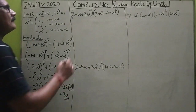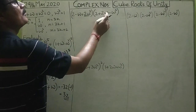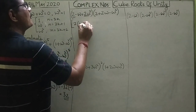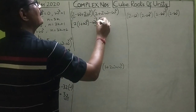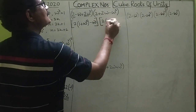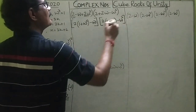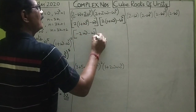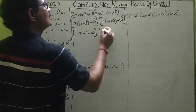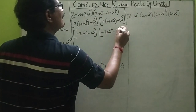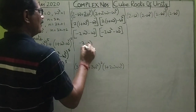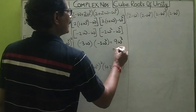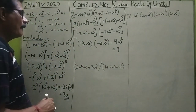The next sum is (2 minus omega plus 2 omega squared)(2 plus 2 omega minus omega squared). In the first expression, taking 2 common from the first and third terms gives 2(1 plus omega squared) minus omega, which by the property equals minus 2 omega minus omega, giving minus 3 omega. In the second expression, 2(1 plus omega) minus omega squared equals minus 2 omega squared minus omega squared, giving minus 3 omega squared. Multiplying: minus 3 omega times minus 3 omega squared equals 9 omega cubed, and since omega cubed equals 1, the result is 9.